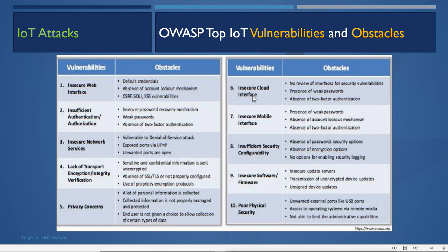Fifth is insecure cloud interface: no security review, weak passwords, absence of two-factor authentication. Sixth is insecure mobile interface: weak passwords, no account lockout, no two-factor authentication. Seventh is insufficient security configurability: no password security options, no encryption options, no security logging. Eighth is insecure software or firmware: insecure update servers, unencrypted and unsigned updates. Ninth is poor physical security: unwanted external USB ports, OS accessible via remote media. These are the OWASP top 10 IoT vulnerabilities.